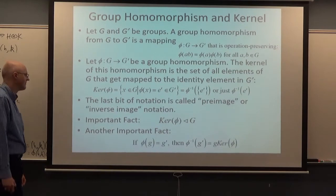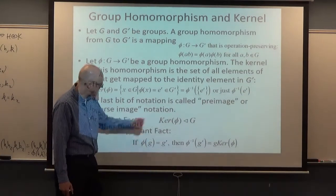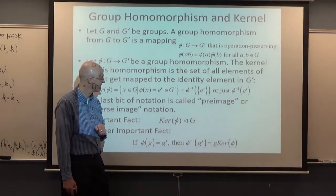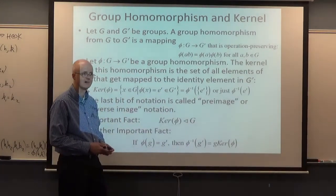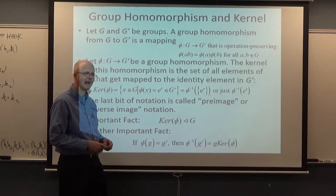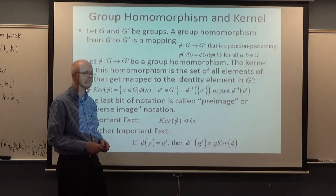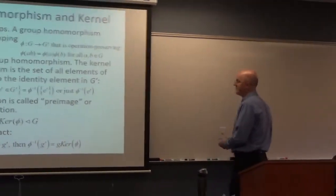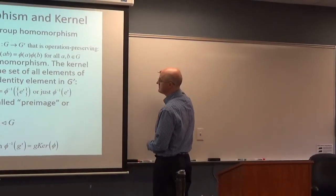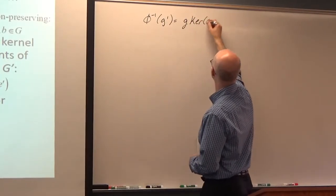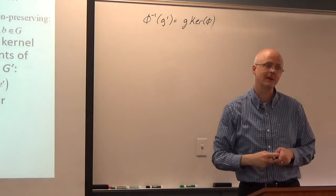Another important fact: if φ(g) = g′, then the pre-image of g′ is the left coset g·ker(φ) containing little g. This is a pretty important fact that comes up on the homework and you should know it for the exam. The pre-image of g′ is this coset, which also equals the corresponding right coset because the kernel is normal.